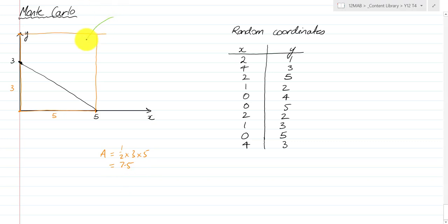The area of this rectangle is 5 times 5, which equals 25. The Monte Carlo method is based on the idea that if you randomly select a point in this rectangle, there is a 7.5 out of 25 chance of hitting a point inside the triangle. We reverse that: because we know the rectangle area is 25, we instead throw 1,000 or a million points into it and use those to determine an approximate area.